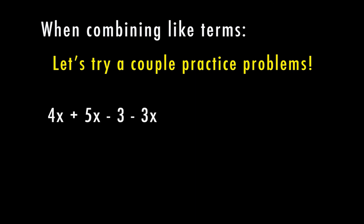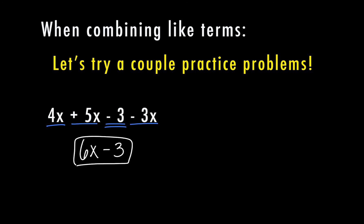For our first practice problem, we have 4x plus 5x minus 3 minus 3x. Let's identify the like terms: I have 4x, 5x, and negative 3x — I can combine those. I also have a negative 3, but I can't combine that with anything else, so it stays separate. Combining the x terms: 4x plus 5x equals 9x, and 9x minus 3x equals 6x. Then I have negative 3 left. So my simplified expression is 6x minus 3.